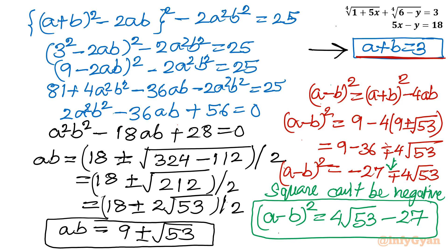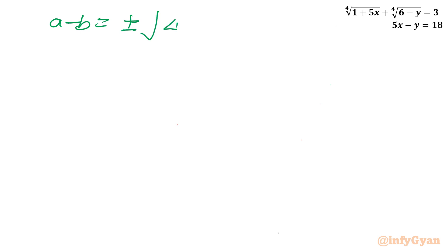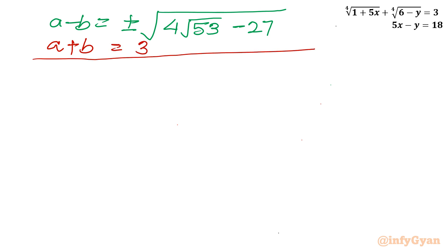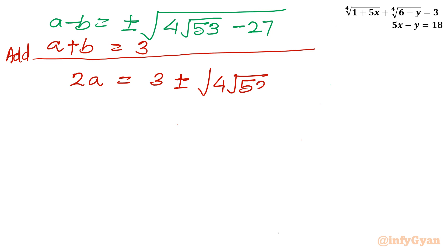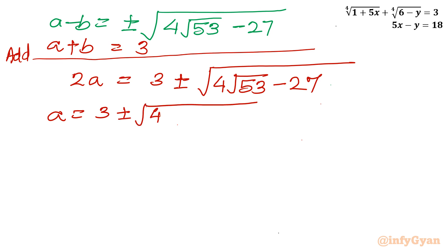Taking the square root of both sides: a - b = ± √(4√53 - 27). Combined with a + b = 3, adding both equations gives 2a = 3 ± √(4√53 - 27), so a = (3 ± √(4√53 - 27)) / 2.